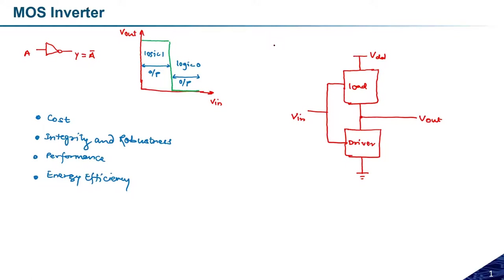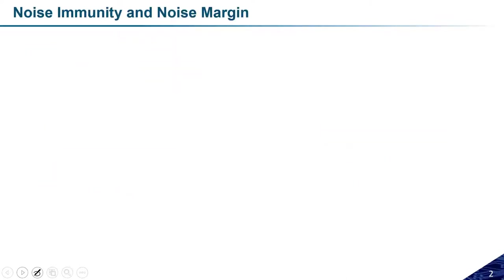Before moving to actual circuit implementation, I need to explain noise margin and noise immunity, which are really very important in circuit analysis. Suppose I have a CMOS inverter. Ideally the behavior should be something like this — with a specific ideal transfer characteristic. Let us make a bigger picture of this behavior and try to understand the noise margin of the CMOS inverter.